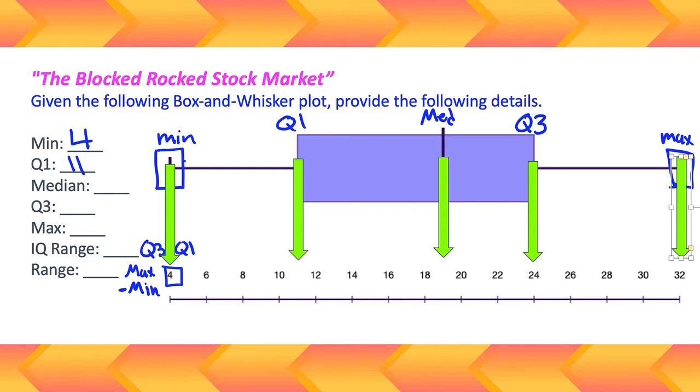Like I said, minimum was 4, Q1 was 11. All right, median looks like it lands between 18 and 20, so I'm guessing that's 19. You might need to use a little spatial reasoning, students. It may not always bullseye a direct number—it may be between several numbers, so make sure you count the tick marks.